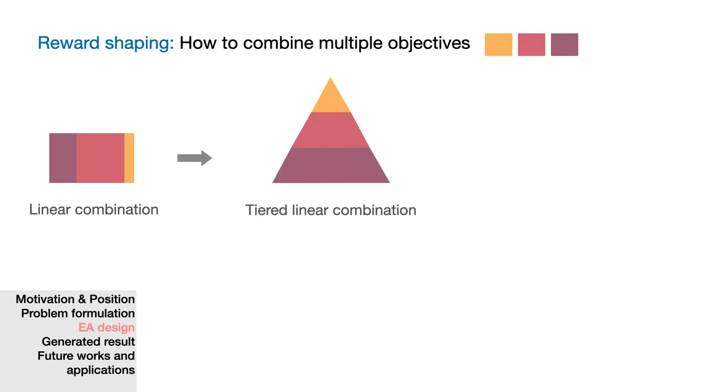To deal with this problem, I propose a smooth tiered linear combination design. We see that instead of each tier activated in a binary manner, now all the tiers are activated in a smooth manner. And this gives the model ability to sense high tier reward while it is still in lower tiers.